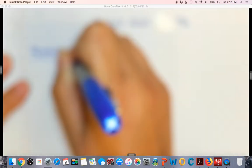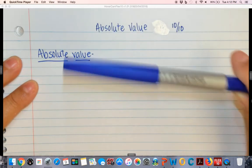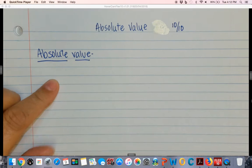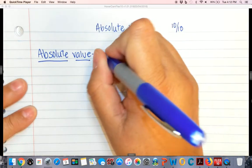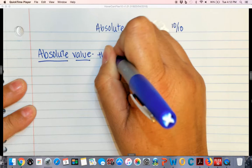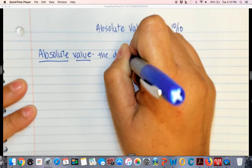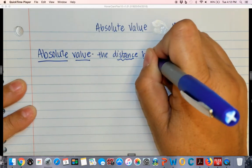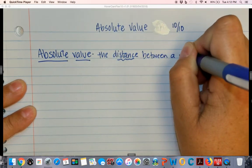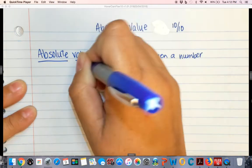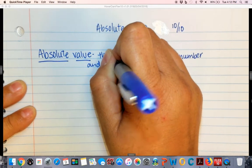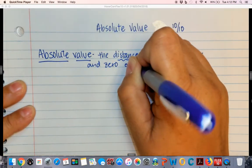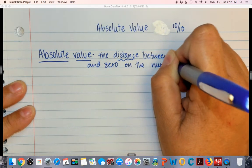We will start with our definition. Hopefully this will focus again. There we go. Alright, absolute value. The absolute value is the distance. There's that word distance that I talked about on Friday. Between a number and zero on the number line.